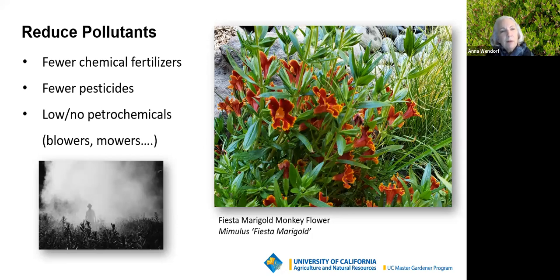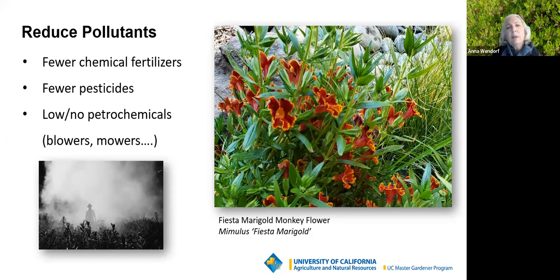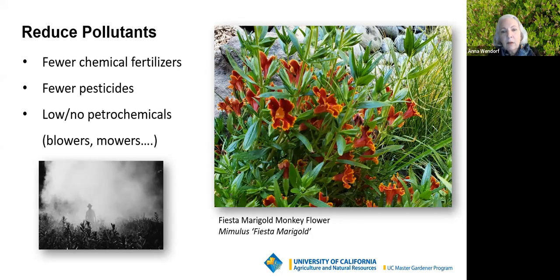When we over-fertilize, over-mow, and over-blow our gardens, we are adding pollutants to the world. A leaf blower will produce as much pollution as 30 cars — it's a terrible way to add petrochemicals to our environment. It also blows all of the duff off of the soils so that native insects can't burrow under the soil, and they cannot emerge in the spring to feed our birds and to reproduce. This is a fiesta marigold monkey flower — easy to tuck in amongst other flowers, short-lived but easy to propagate from cuttings.